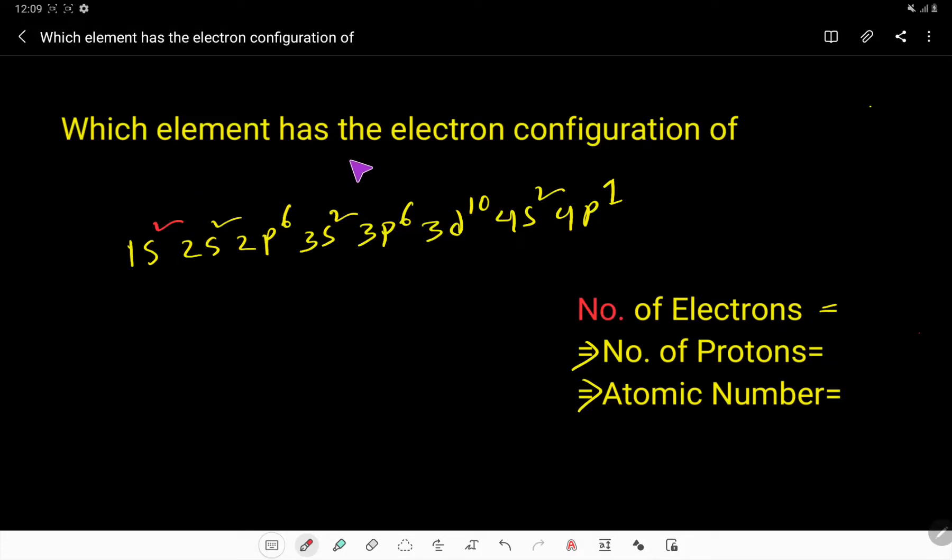Which element has the electron configuration of 1s² 2s² 2p⁶ 3s² 3p⁶ 3d¹⁰ 4s² 4p¹? To find out the name of this element, we first have to count the number of electrons present in this electron configuration. So let us count: here 2, here 2, here 6, here 2, here 6, here 10, here 2, and here 1.